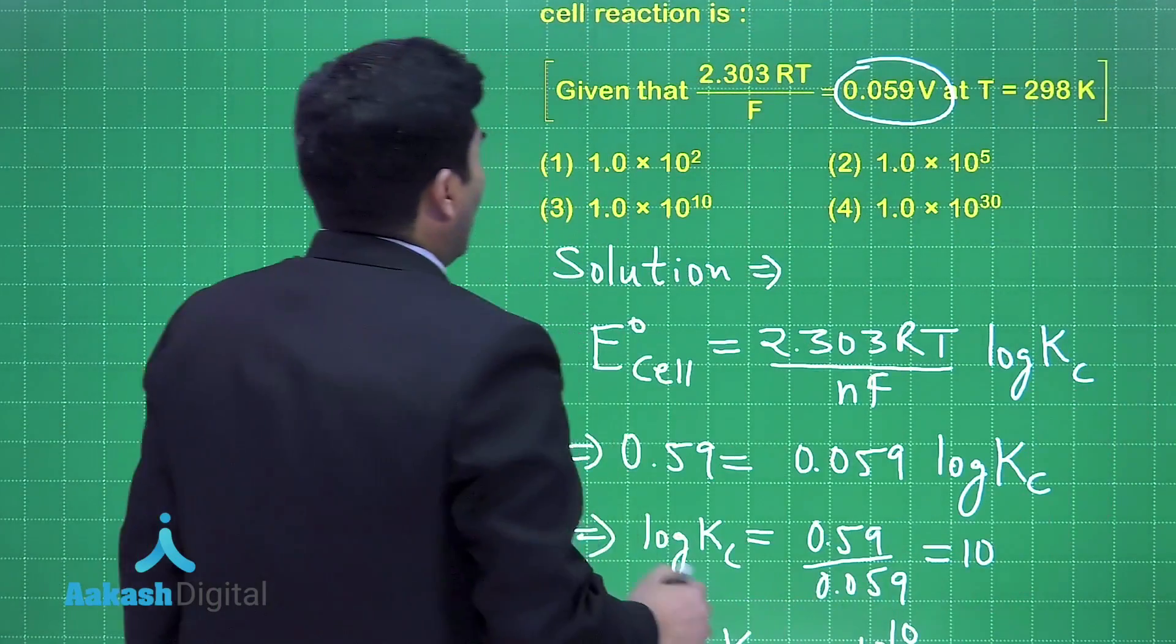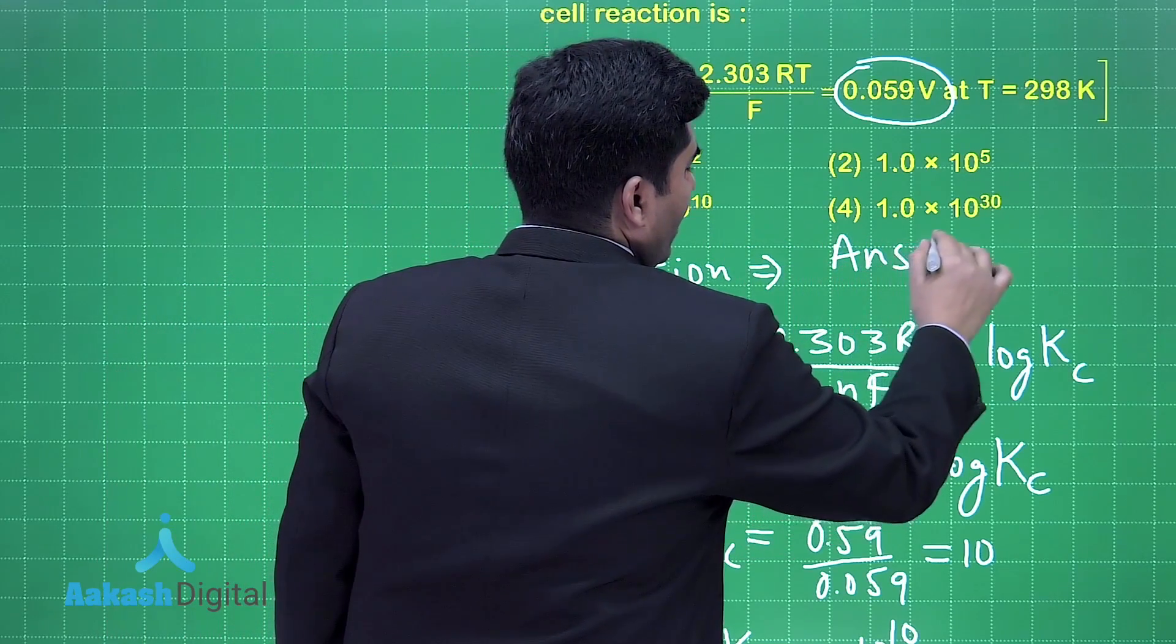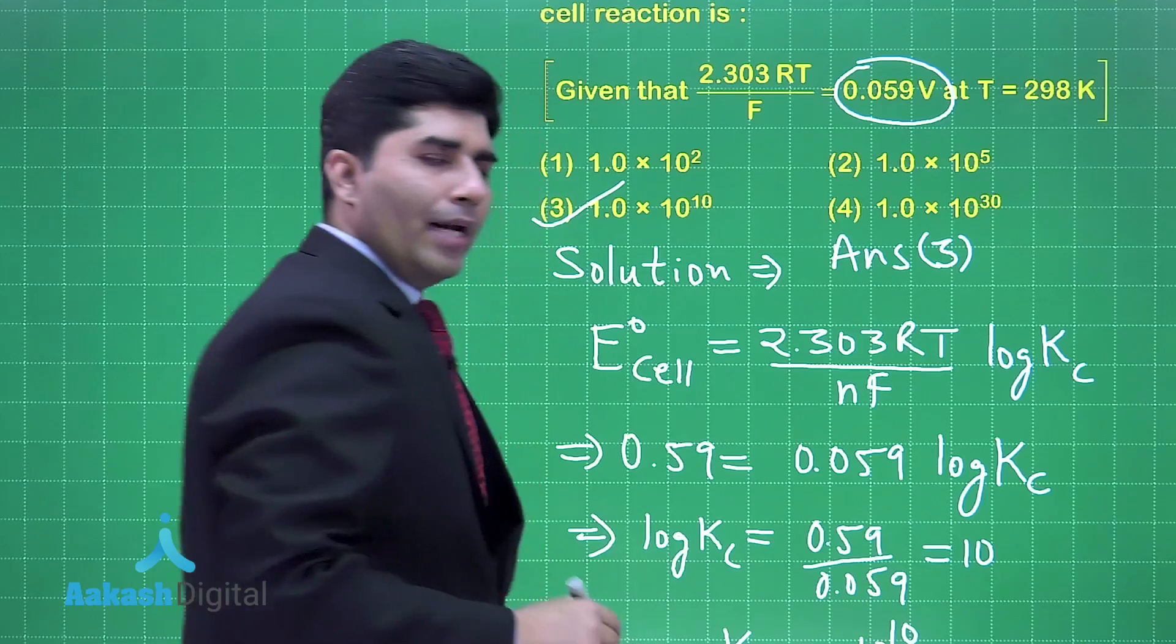This is our final answer. Let's check in which option it is given. 1.0 × 10^10 is the answer, so the final answer is option number 3.